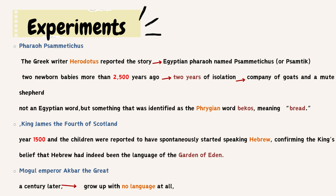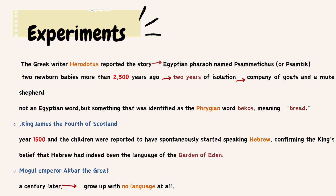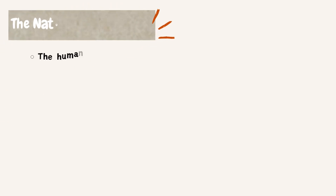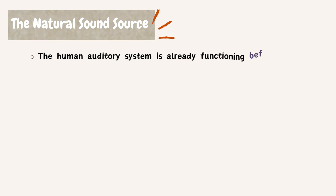About a century later, the Mughal Emperor Akbar the Great also arranged for newborn babies to be raised in silence, only to find that the children produced no speech at all. These were the three major experiments conducted in history, and their results varied from each other.